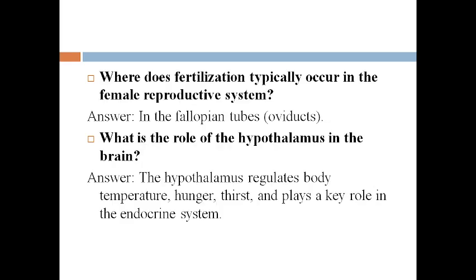Where does fertilization typically occur in the female reproductive system? In the fallopian tubes, that is the oviducts. What is the role of the hypothalamus in the brain? The hypothalamus regulates body temperature, hunger, and thirst, and plays a main role in the endocrine system.